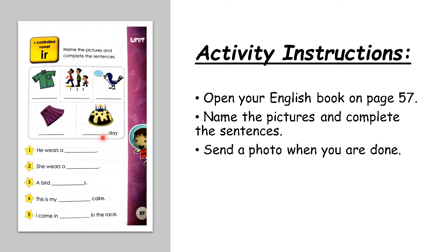If you can't remember, go watch your lesson video again, then fill in the blanks with the correct words. Then we have to read the sentences and see which one belongs to which picture. For example, the first one says 'he wears a' — so he, meaning a boy, wears a shirt. Then you put in 'shirt' right where you also put it underneath the picture.